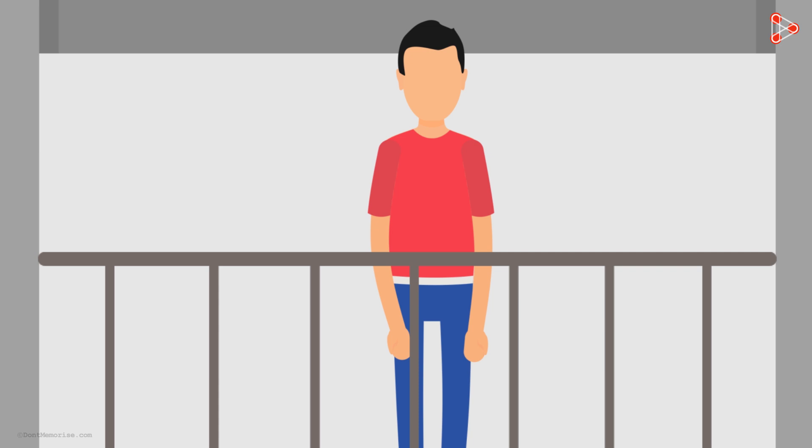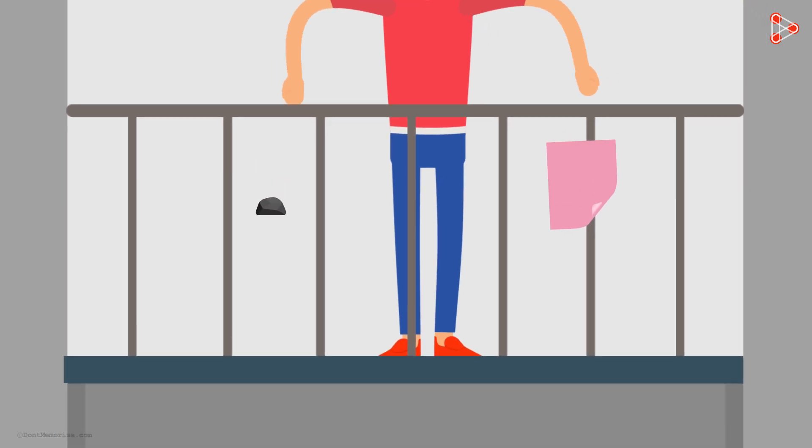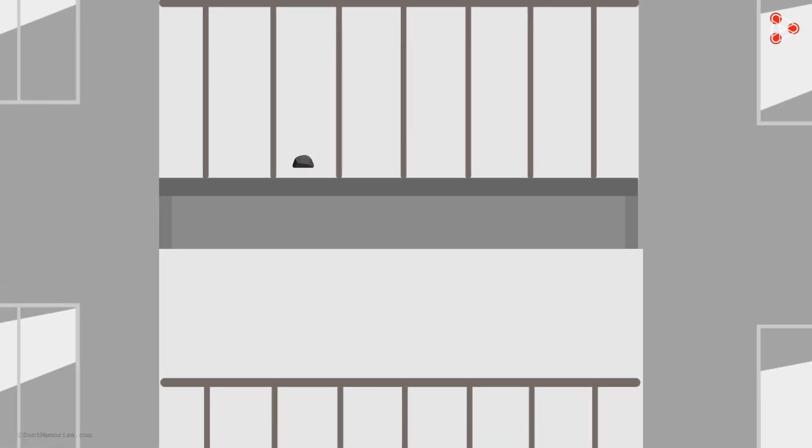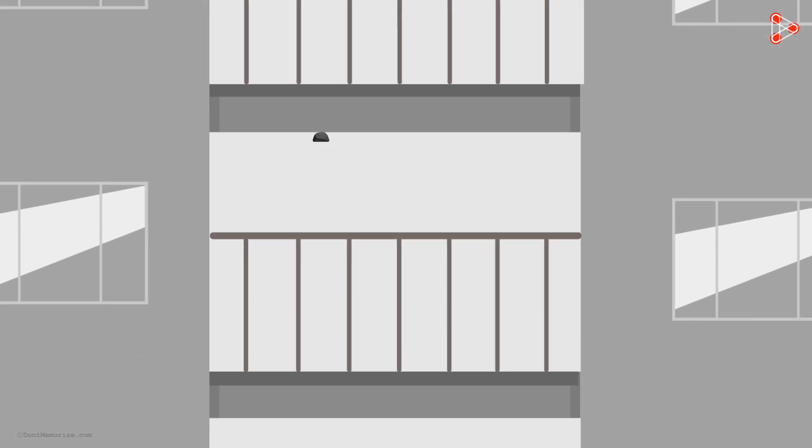Say you are on the fifth floor of a building, and you have a stone in one hand and a piece of paper in the other. If you drop both together, which one will reach the ground first? Or will they reach simultaneously?